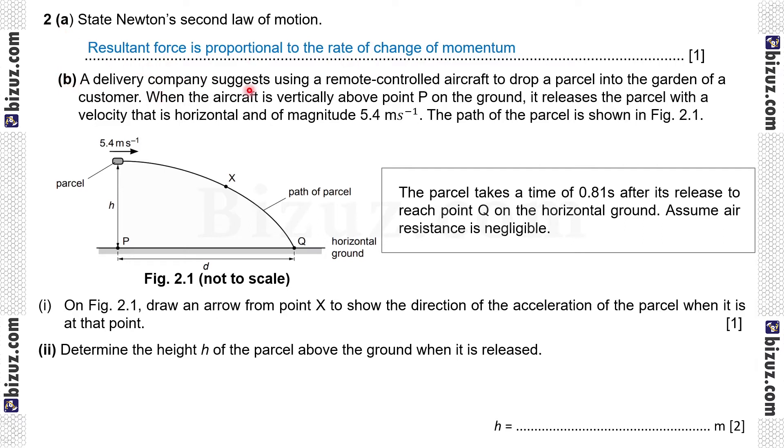2b. A delivery company suggests using a remote control aircraft to drop parcel into the garden of a customer where the aircraft is vertically above point P shown in the figure and it releases the parcel with a velocity that is horizontal and magnitude is 5.4 meter per second. The path of the parcel is shown in figure 2.1. So informations are given here. Parcel takes a time of 0.81 second after it's released to reach point Q on the horizontal ground. Assume air resistance is negligible. 2b1. On figure 2.1, draw an arrow from point X to show the direction of the acceleration of the parcel when it is at that point.